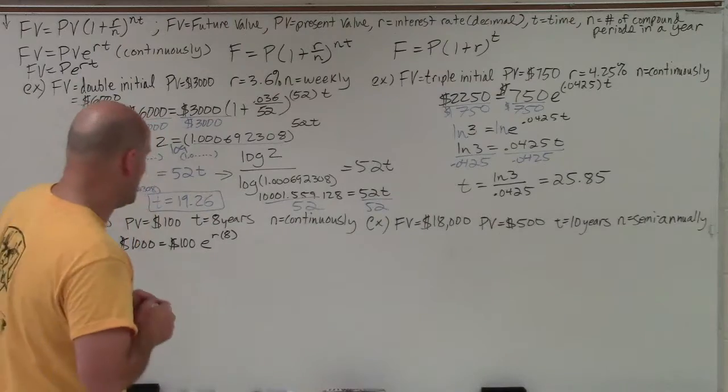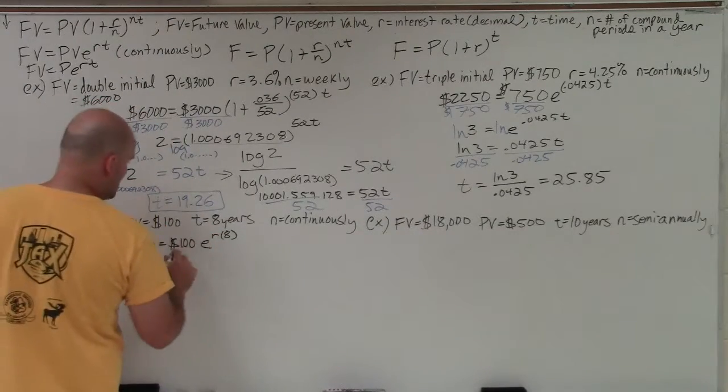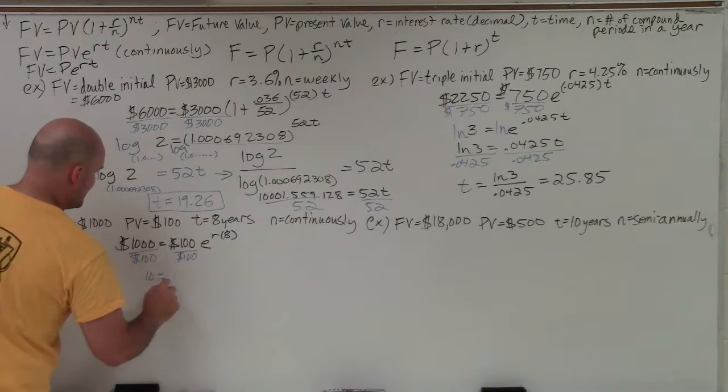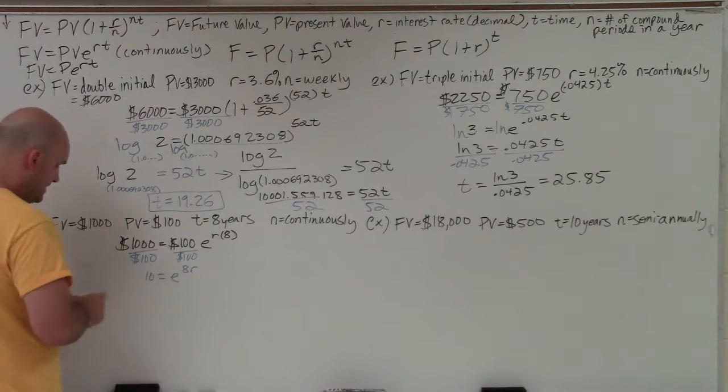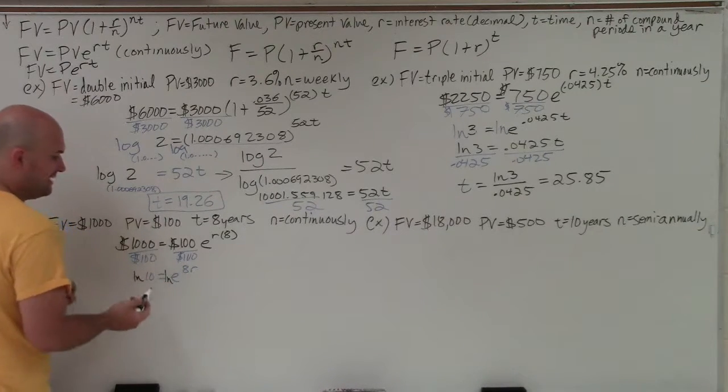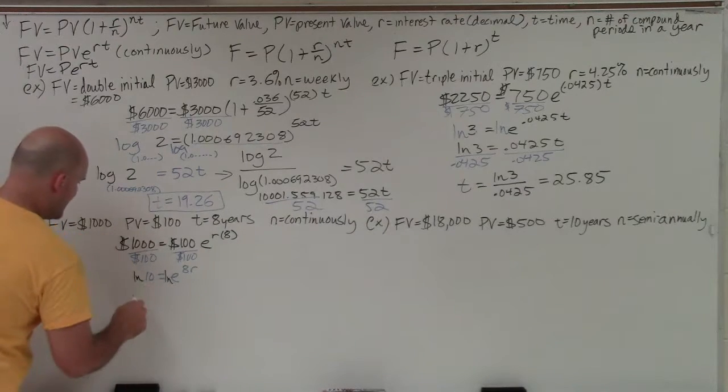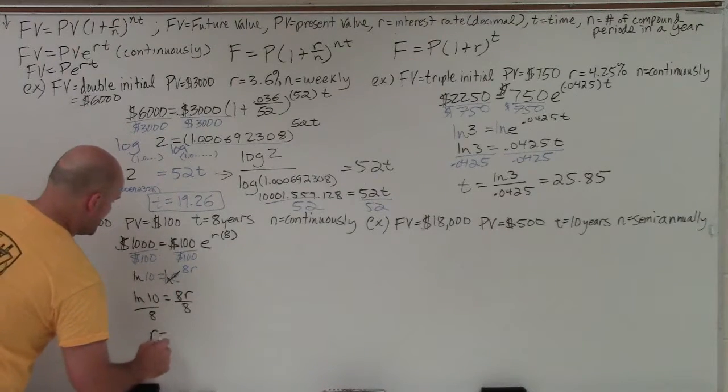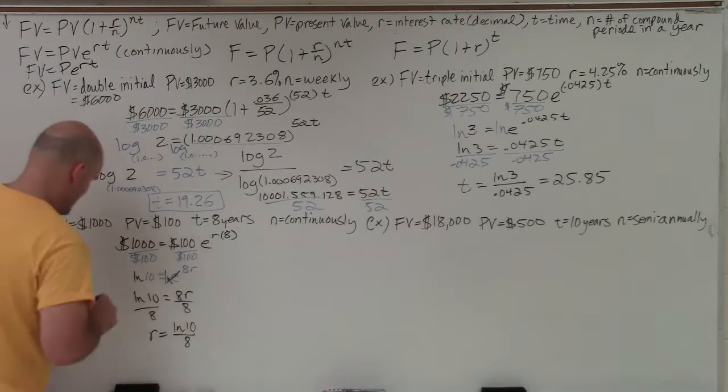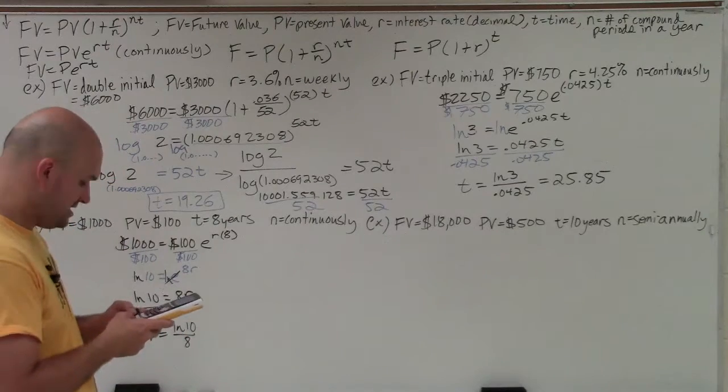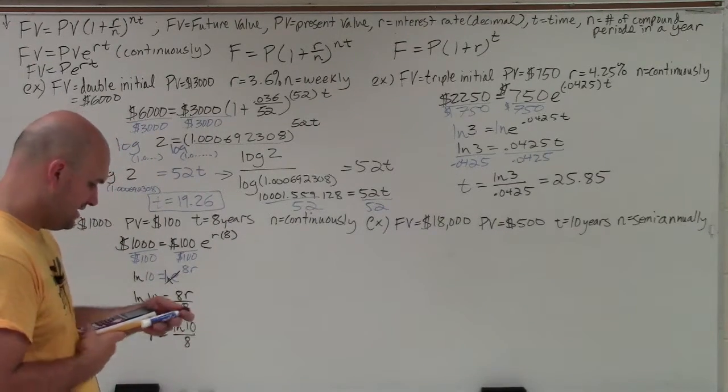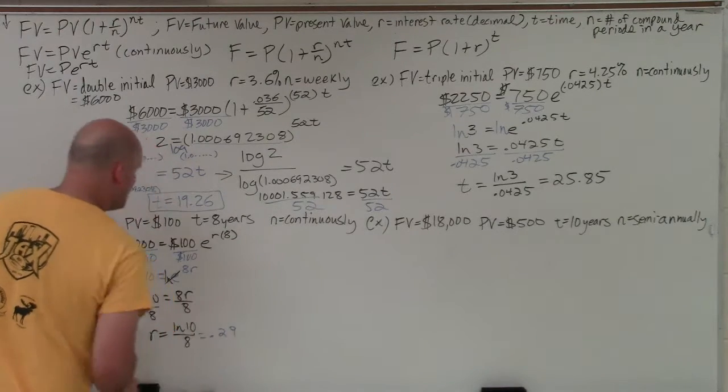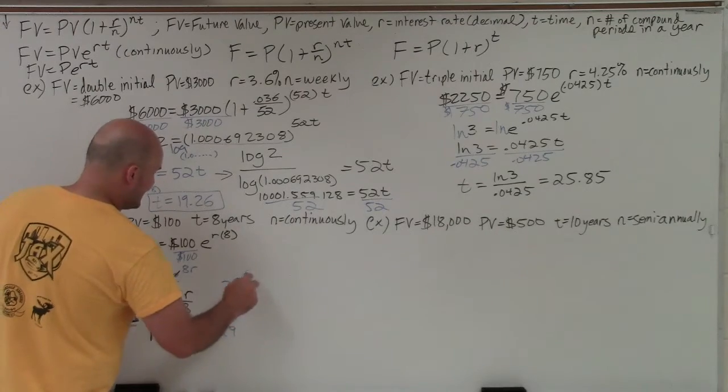OK? So now this one's just going to be very similar to what we did before in the last example, except instead of solving for t, we're solving for r. So I divide by 100. And that's going to leave me with 10 equals e to the 8r. Then what I'll do is I'll just take the ln of both sides. The ln of e is equal to 1, which is going to leave me that 8r. So then I have ln of 10 equals 8r. Then I'll just divide by 8. Divide by 8, r equals ln of 10 divided by 8. So now, again, I take my calculator. And I do ln of 10, close the parentheses, divided by 8. And that's going to give me 0.29.